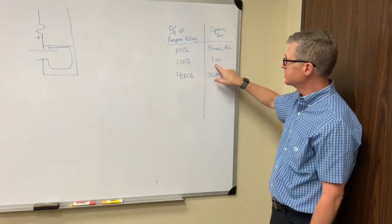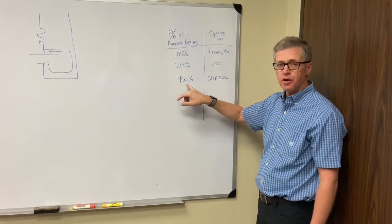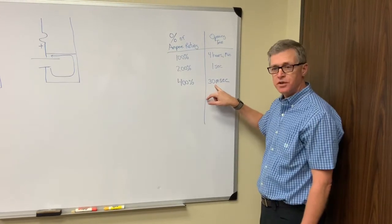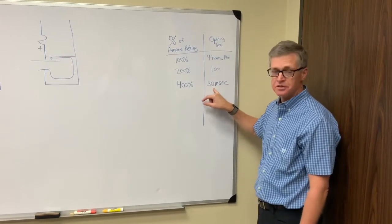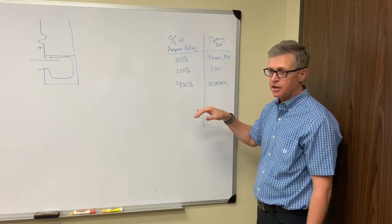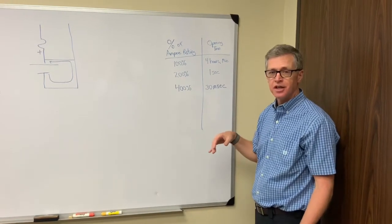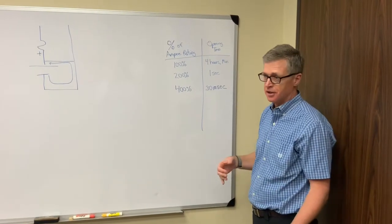200% one second. You need 400% to open that fuse within 30 milliseconds. Now, as I've said, a battery is going to discharge at incredibly high rates under a short circuit, like 20, 30 amps.